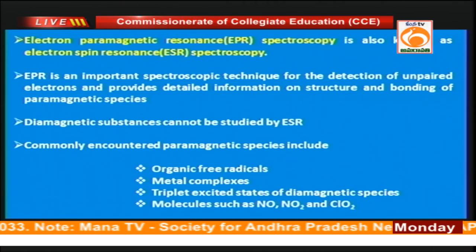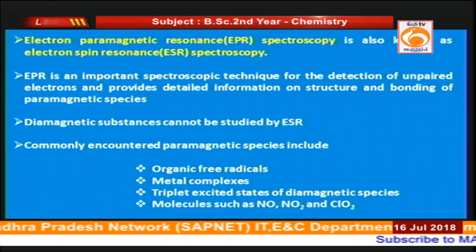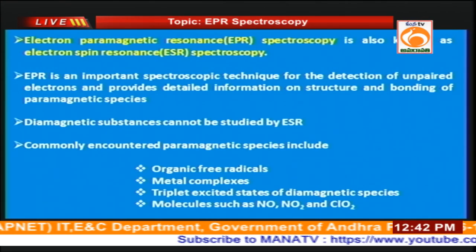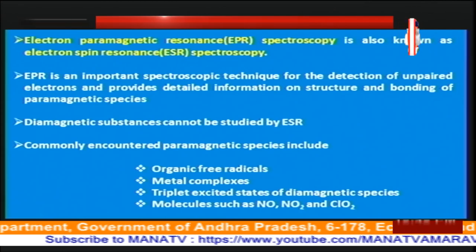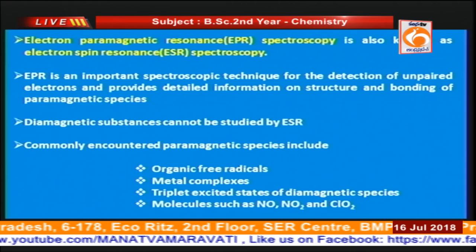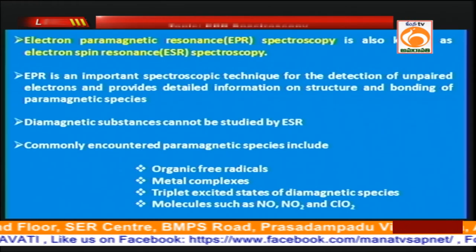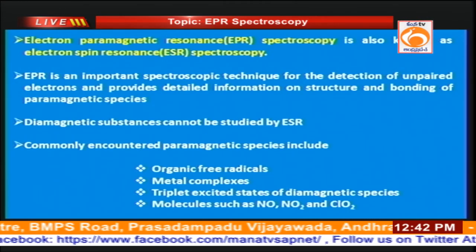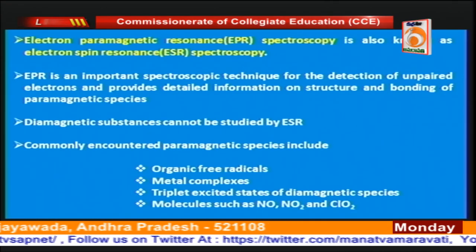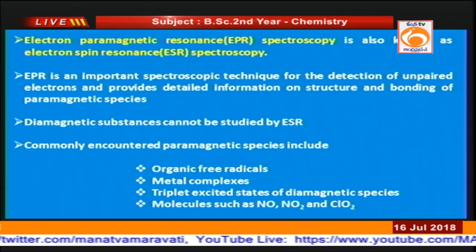Whenever there is an unpaired electron in the system — whether it is a metal complex, a molecule, or a radical — we can identify these systems using EPR. It is a very important tool for studying systems with unpaired electrons. Diamagnetic substances contain paired electrons and cannot be studied using ESR — we cannot get an ESR spectrum from diamagnetic substances.